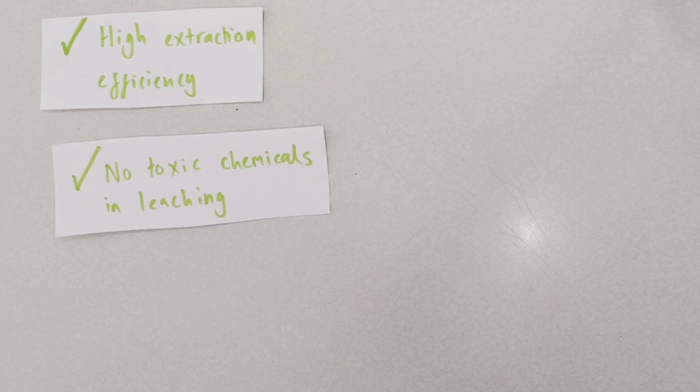And secondly, it doesn't require the use of toxic chemicals to produce the leachate. Often in many mining processes, the chemicals used to leach the key metal ions from an ore are incredibly toxic, incredibly harmful to humans. Things like mercury, for example, are used in the extraction of gold.